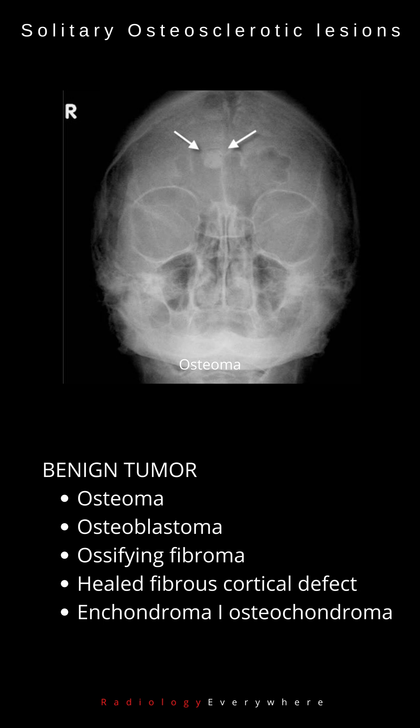Benign tumors such as osteoma, osteoblastoma, ossifying fibroma, healed fibrous cortical defect, enchondroma, and osteochondroma are also causes of solitary osteosclerotic lesions.